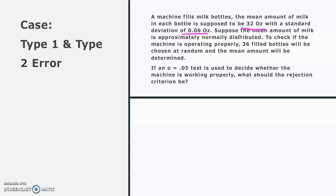Suppose the mean amount of milk is approximately normally distributed. To check if the machine is operating properly, 36 filled bottles will be chosen at random and the mean amount will be determined. If an alpha equals 0.05 test is used to decide whether the machine is working properly, what should the rejection criterion be?